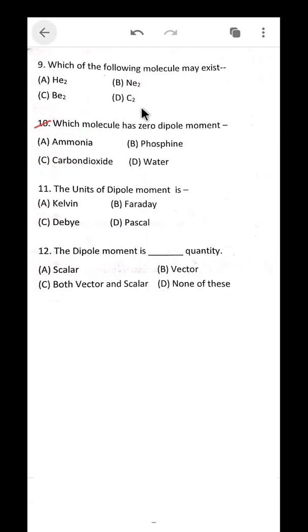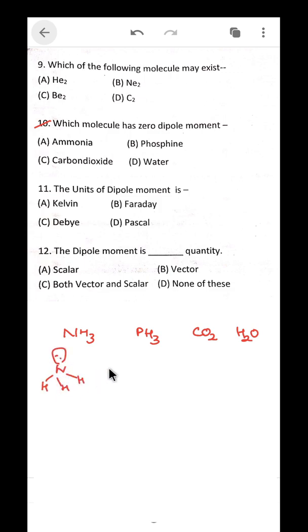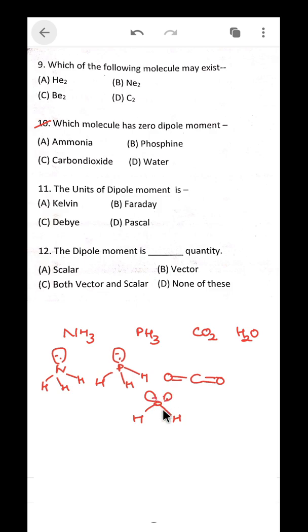Question 10: which molecule has zero dipole moment? NH3 has a pyramidal shape, PH3 also has the same geometry, and H2O has a bent shape — all have dipole moments. CO2 forms double bonds with oxygen and has linear shape. Though CO2 has polar bonds, the effects cancel each other, giving a net dipole moment of zero. So the answer is carbon dioxide.